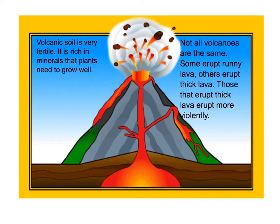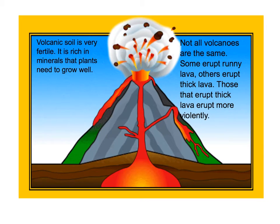We're all aware of the dangers of living near a volcano — the obvious eruption and destruction it can bring. However, some people do choose to live there. One of the main reasons is that volcanic soil is very fertile, rich in minerals, and plants can grow really well, so farmers growing crops there can get a really big yield. Not all volcanoes are the same though — some erupt lava that runs down the side, while others erupt thick lava that takes a long time to run down. Those that erupt the thickest lava are often the most violent volcanoes.